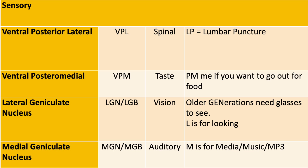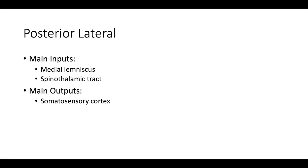But it's PL, not LP — and like I said, these things all have a million different names, so you can't just memorize them in a certain order or you'll get mixed up on the actual test when the letters are out of order. The main inputs are the medial lemniscus and the spinothalamic tract. The main outputs are the somatosensory cortex.